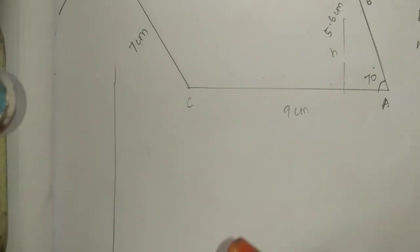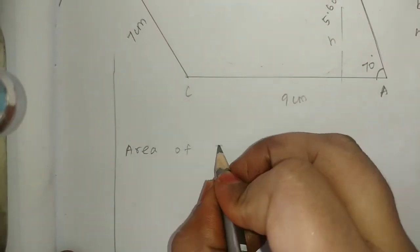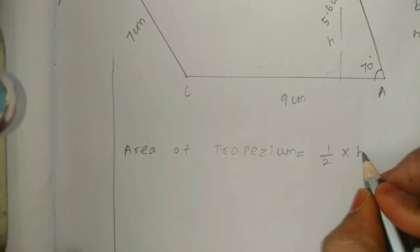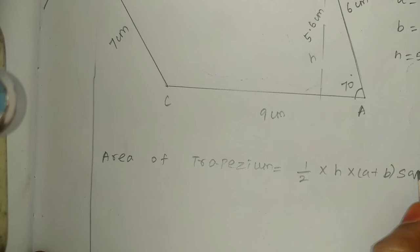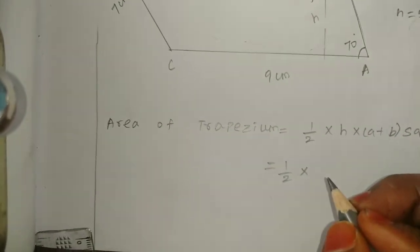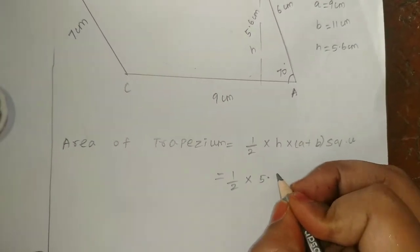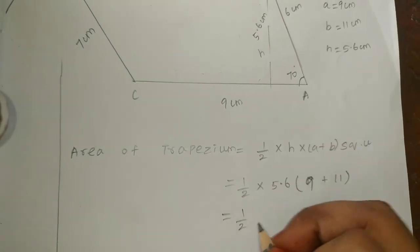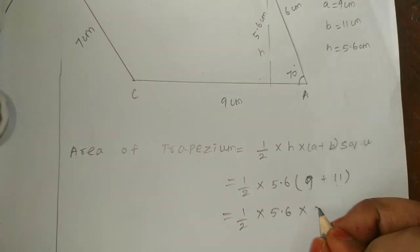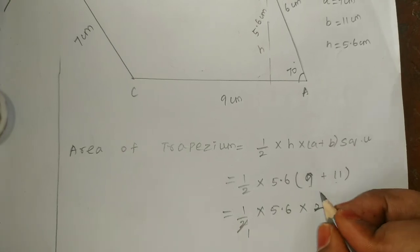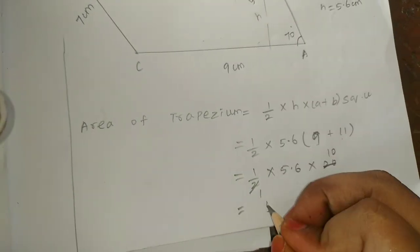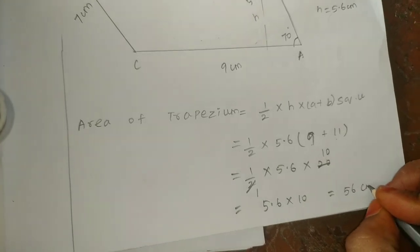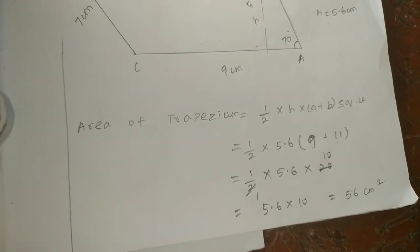Now I will solve the formula. Formula: area of trapezium is equal to half into H into (A plus B) square units. Half into H, where H is 5.6, A is 9, B is 11. So half into 5.6 into (9 plus 11) = half into 5.6 into 20 = 5.6 into 10 = 56 centimeter square. Clear? Thank you.